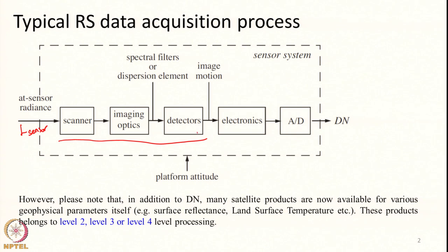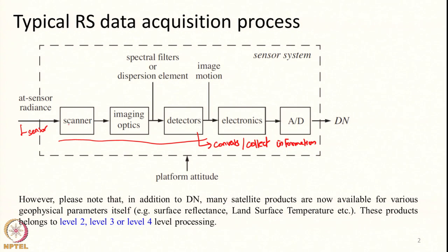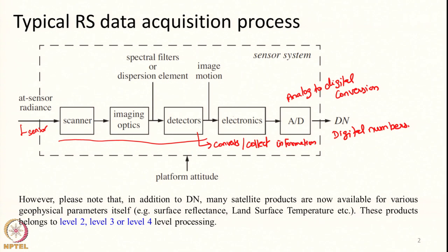In detail, how the image collection process happens we will see in later lectures. But now let us assume whatever radiance reaches the sensor is collected by the imaging scanner and optics, then it will reach the detector. The detector essentially collects information from the object of interest. Whatever is coming in, the optics will collect and pass it on to detectors. The detectors collect it and record it in a meaningful way.